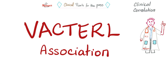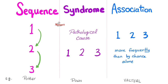Why VACTERL Association? First, you need to know the difference between a Sequence, a Syndrome, and an Association. What's a Sequence? First you had this event, which led to this event, which caused this event — that's a Sequence, such as Potter Sequence, and I have made a video about this on YouTube.